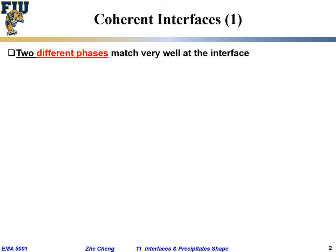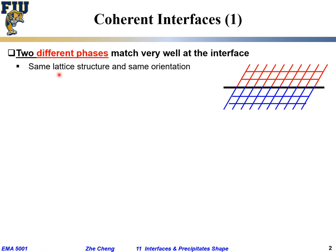The simplest one is what people call a coherent interface. Coherent means the two phases match very well at the transition region between the two phases. We may have one scenario where the two phases have the same lattice structure and same orientation — something like what we draw here — with similar lattice parameter as well, and then the matching at this transition region or interface would be very good, meaning coherent.